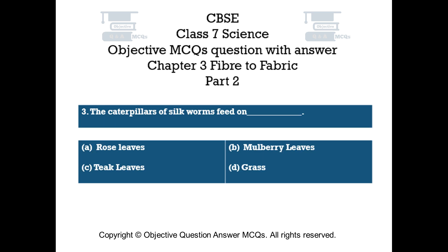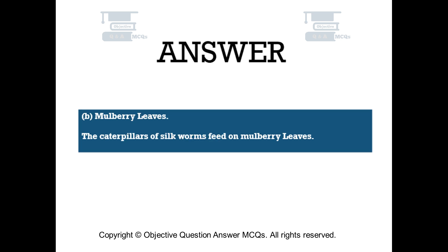Question number 3. The caterpillars of silkworms feed on — Option A: Rose leaves. Option B: Mulberry leaves. Option C: Teak leaves. Option D: Grass. The right answer is Option B — Mulberry leaves. The caterpillars of silkworms feed on mulberry leaves.